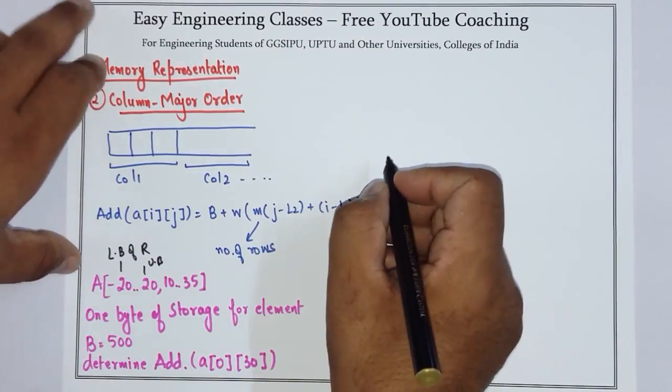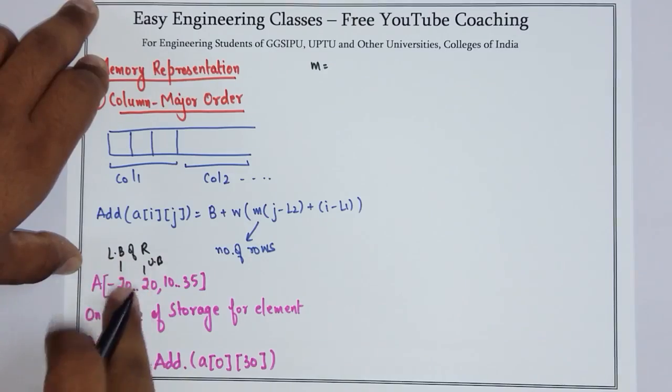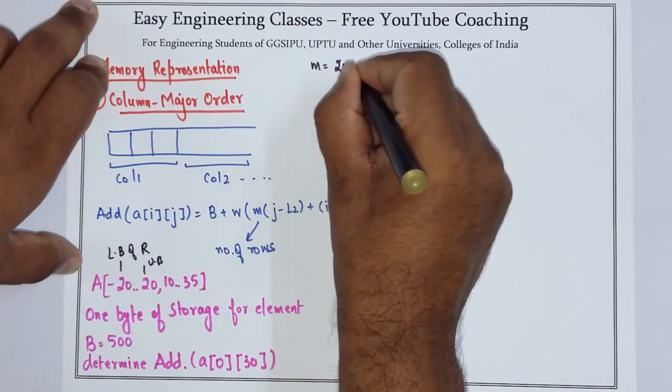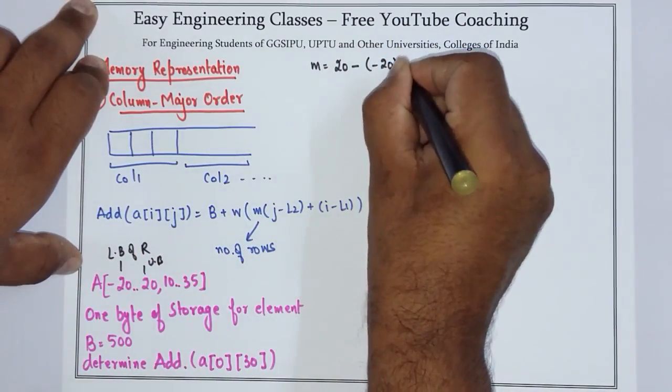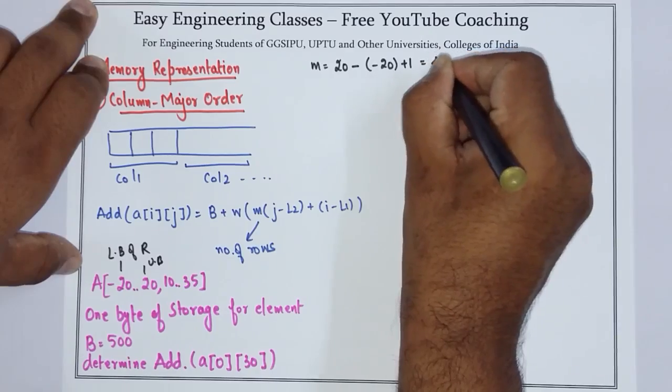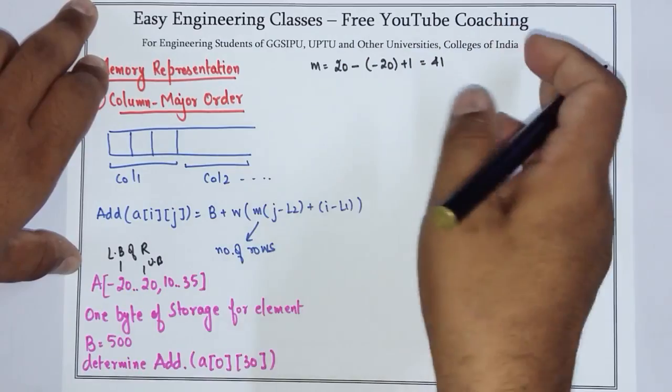Number of rows which is m is given by upper bound of rows, that is 20, minus lower bound of rows, which is -20, plus 1, which equals 41. So the number of rows is 41.